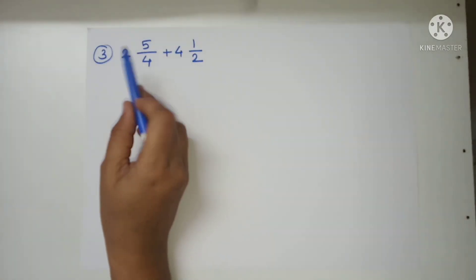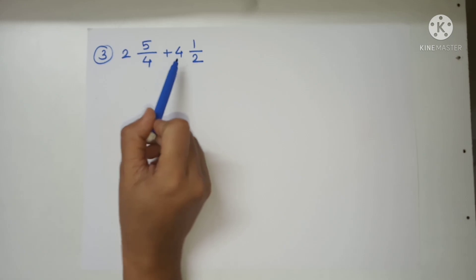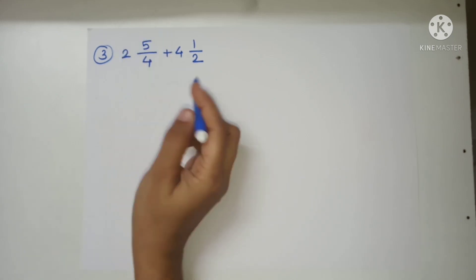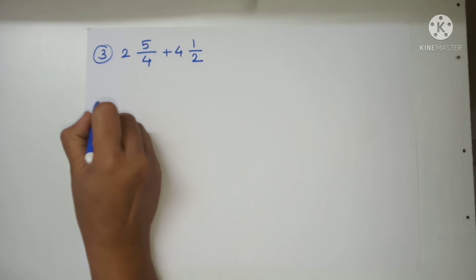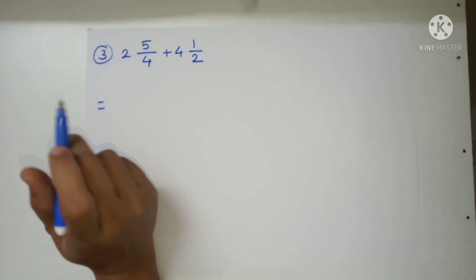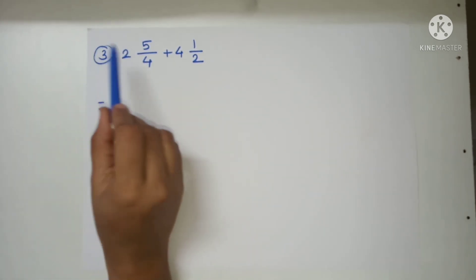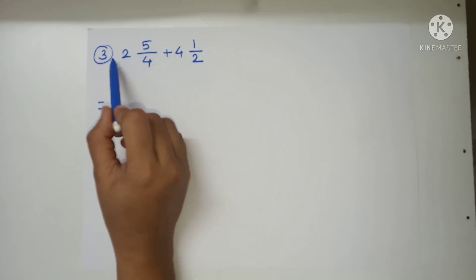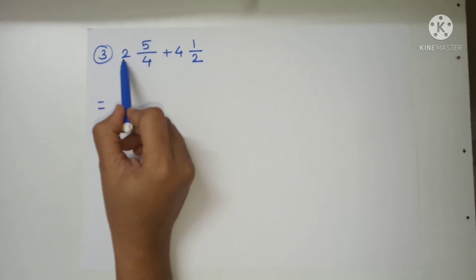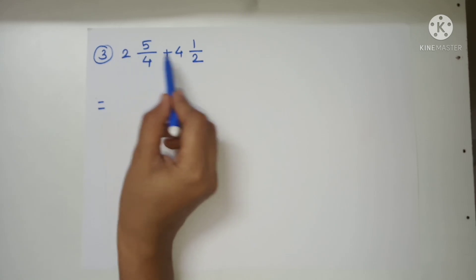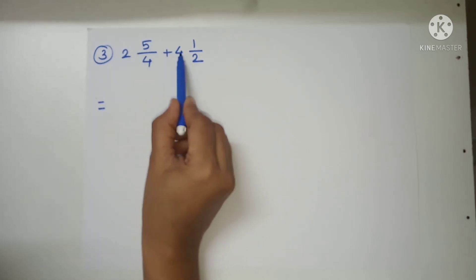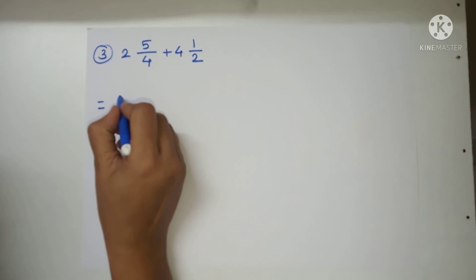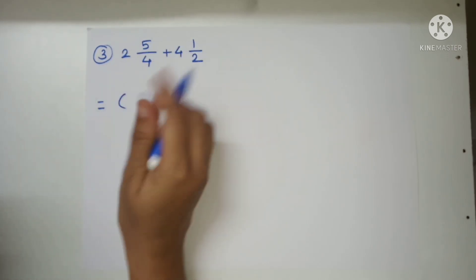Now we are doing addition again — addition of mixed numbers with a second method. This is the combination of whole number and fraction. We separate the whole numbers: 2 and 4. We do addition of the whole numbers separately: 2 plus 4.